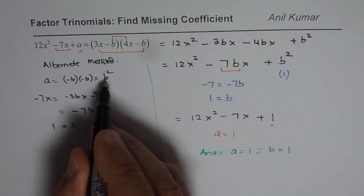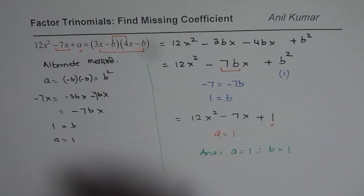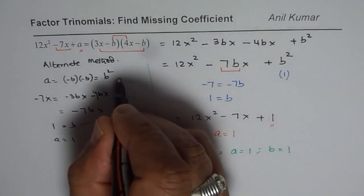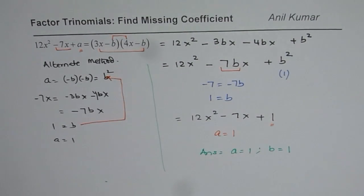And then substituting b back here, you get a equals to 1. That is, when you substitute this value of b here, right? So you get a equals to 1.